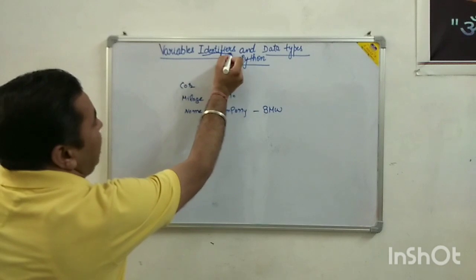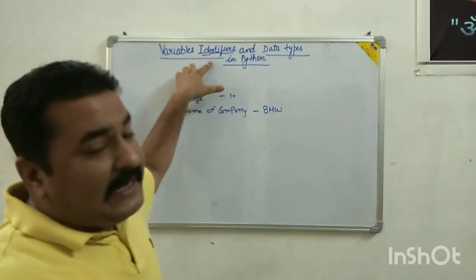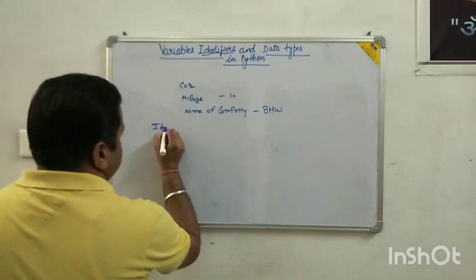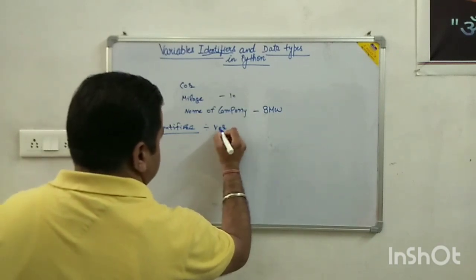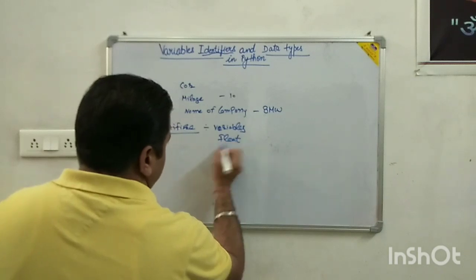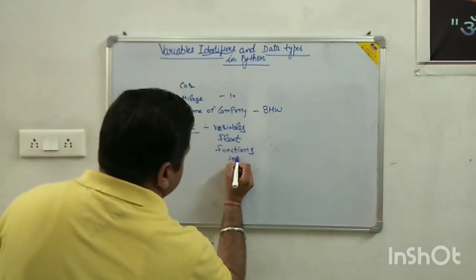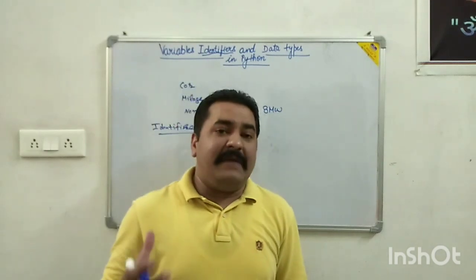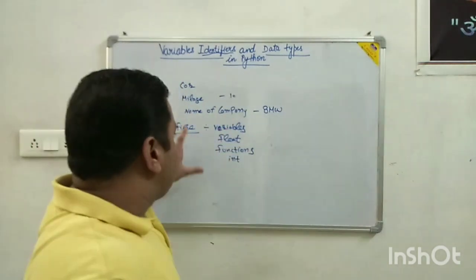Now it comes to identifiers. As the name suggests, an identifier is used to identify each element — it represents each element in a memory location. We can use identifiers for variables, floats, functions, and integers. All these things come under the identifier.